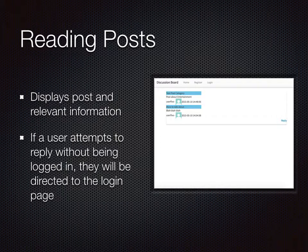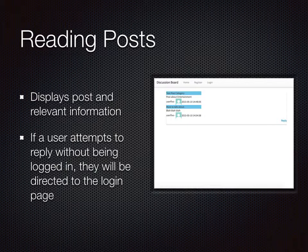Looking at posts, whether you're a logged-in user or just a general user looking at the site without being logged in, when you click on the hyperlink of a post title from the main page, it brings up the post thread. The very top of the thread will show the original post — the title in blue, the post content, the user who posted it, their avatar, and the date and time that it was created. Then any replies to that will show below in the same format.